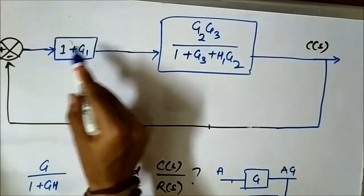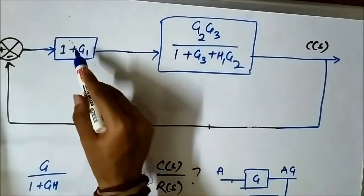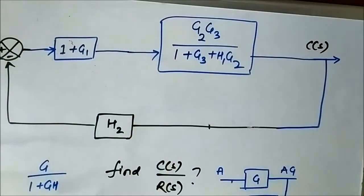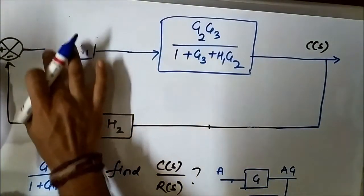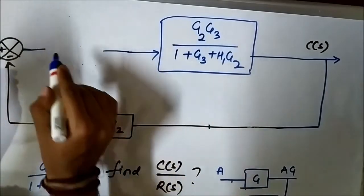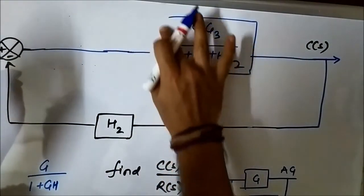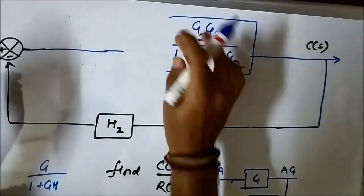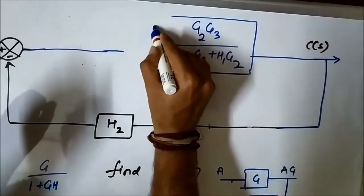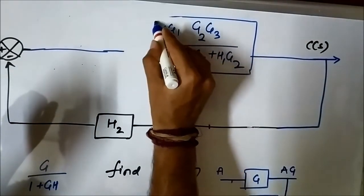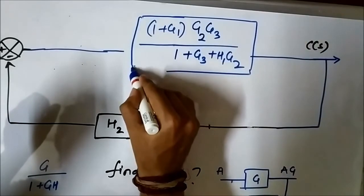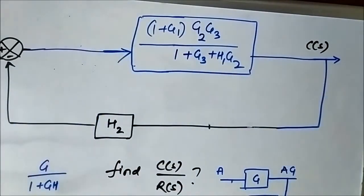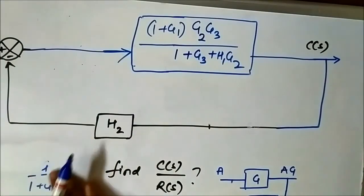Again these two blocks are connected in cascade, so they are multiplied together. We combine them and the result is (1+G1) multiplied by G2·G3/(1+G3+H1·G2).